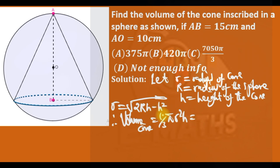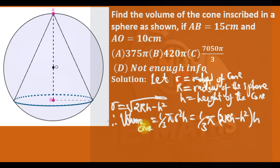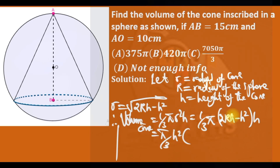Substituting r² = (2RH − H²) into the volume formula, we have V = (1/3)π(2RH − H²)H. We can factor out H, giving V = (π/3)H²(2R − H). That is the volume of a cone inscribed in a sphere.